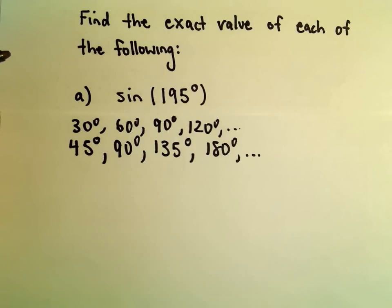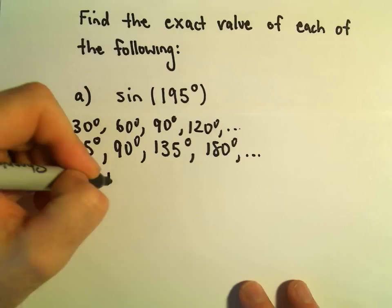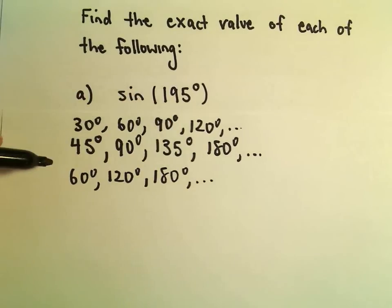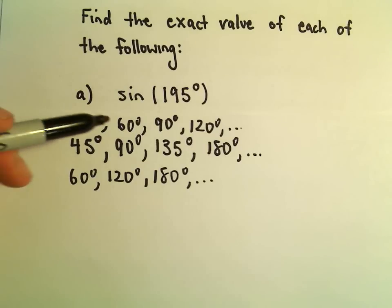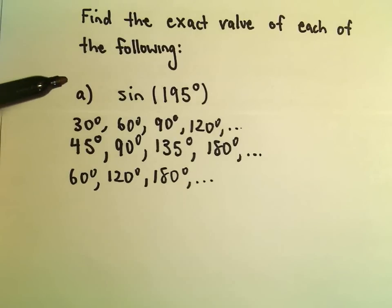So what I'm going to try to do, you could do the same thing with 60 degrees - 60°, 120°, we know 180 degrees, again just multiples of 60 degrees. I'm either looking for two numbers in here that either add up to 195 or whose difference is 195.